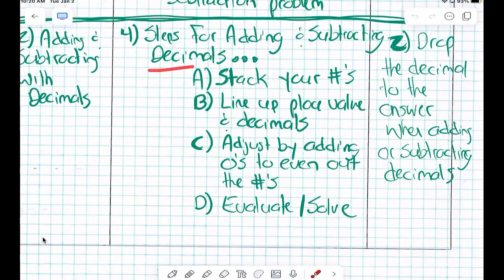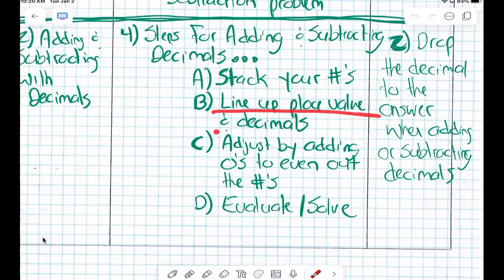All right. The process is this. When adding and subtracting decimals, the first thing we're going to do is stack our numbers. After we stack our numbers, we're going to make sure that we line up the place value and the decimal. After we line up the place values and decimals, we're going to even everything out by adding zeros. And then solve means the same as evaluate.